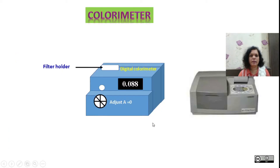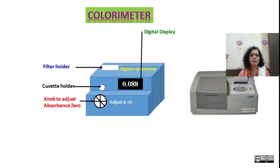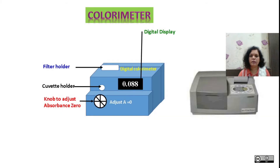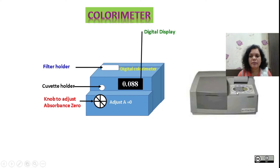We are utilizing a colorimeter or spectrophotometer here. This is the sample holder, cuvette holder, knob to adjust the absorbance, and digital display. This is an actual spectrophotometer which will look like when you perform the experiment offline. This particular assembly is placed with our department.